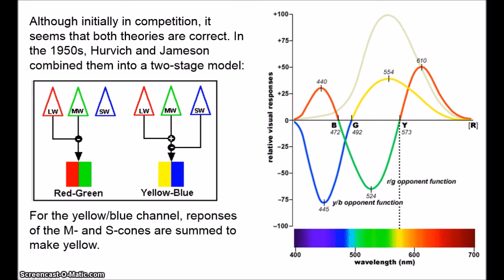Although I've been talking about cells being inhibited and excited and opponent channels, we should take that with a bit of a grain of salt, because we're still not really sure how the opponent process mechanism is physically realised in the brain. These results are based on psychological experiments, but there's still a lot of debate about how exactly colour perception works in the later stages of visual processing. There's a lot we don't know, and much of what I've said is somewhat simplified.